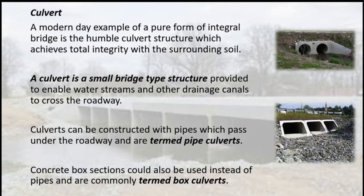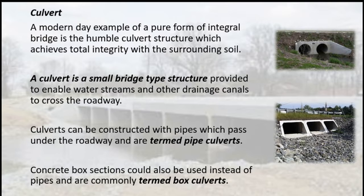Culverts can be constructed with pipes which pass under the roadway and are termed pipe culverts. Concrete box sections could also be used instead of pipes and are commonly termed box culverts.